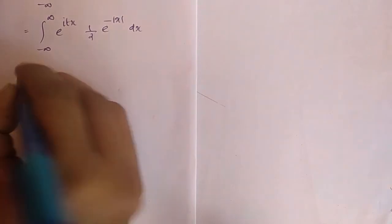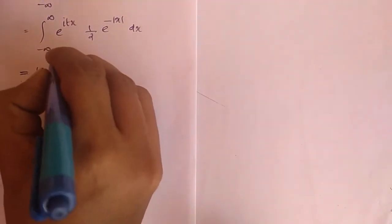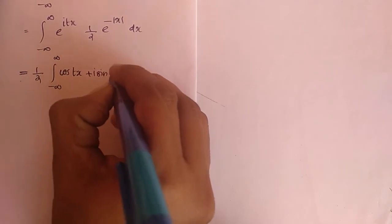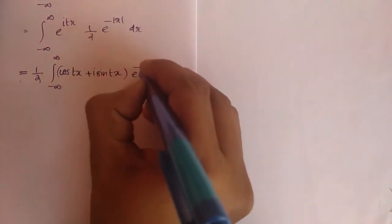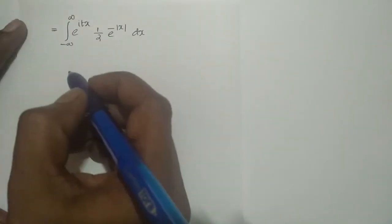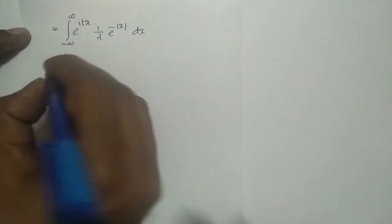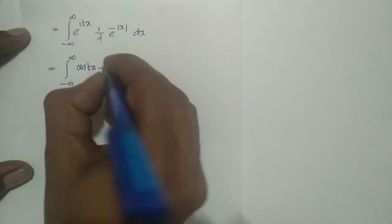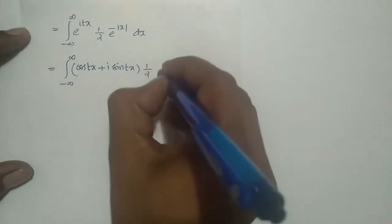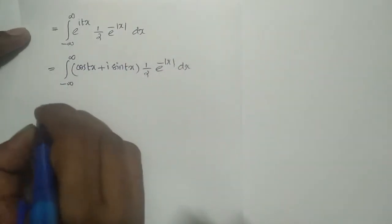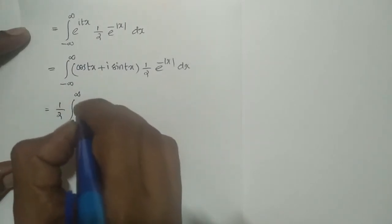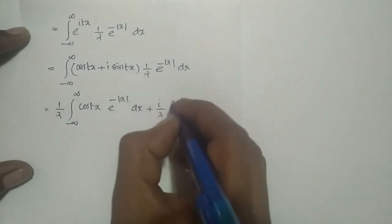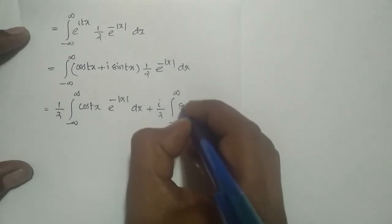This equals (1/2) times the integral from minus infinity to infinity, where e^(itx) can be written as cos(tx) + i·sin(tx). So we get (1/2) times the integral from minus infinity to infinity of cos(tx) e^(−|x|) dx, plus (i/2) times the integral from minus infinity to infinity of sin(tx) e^(−|x|) dx.